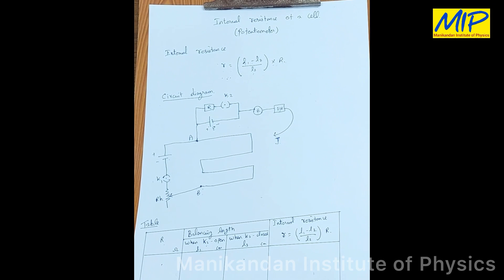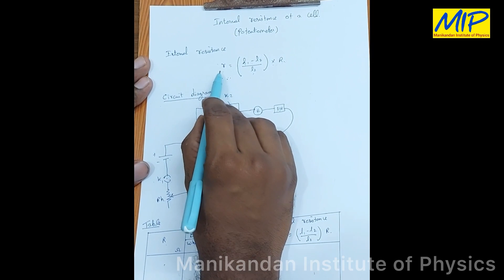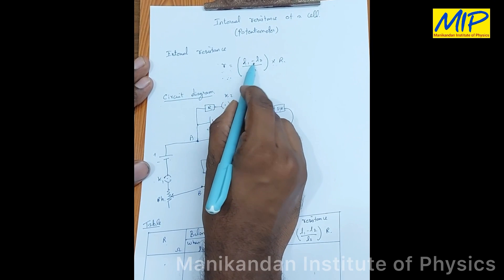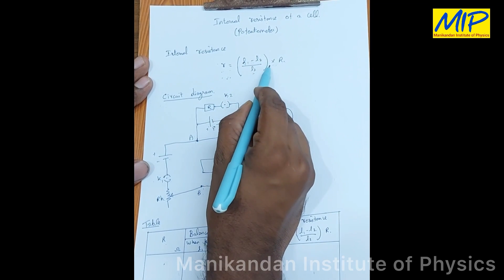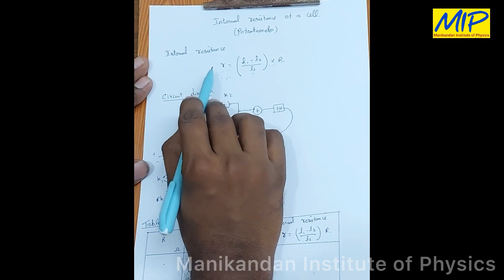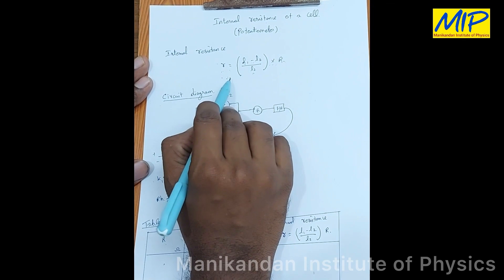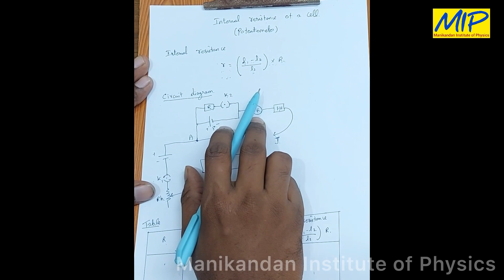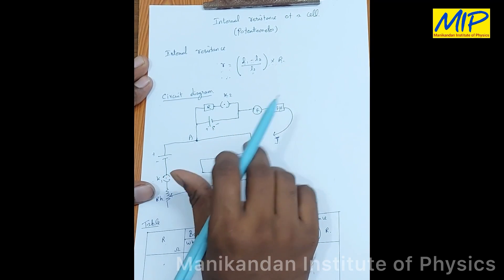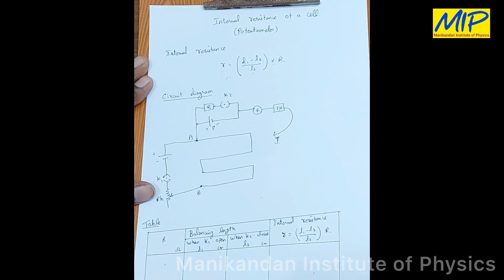To determine the internal resistance of the cell using a potentiometer, we need the generalized formula: r equals to (l1 minus l2) divided by l2, multiplied by R. I have already explained how to obtain this expression — I will give the link in the description, you can check it out. Using this circuit diagram I am going to find the internal resistance of the given cell.